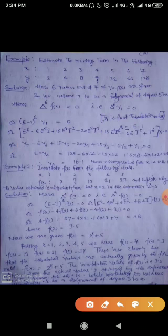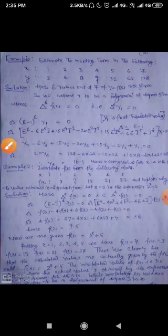Next example: interpolate f(2) from the following data. x equals 1, 2, 3, 4, 5. f(x) equals 7, missing value, 13, 21, 37. Explain why the value obtained is different from x equals 2 in the expansion 2 to the power x plus 5.